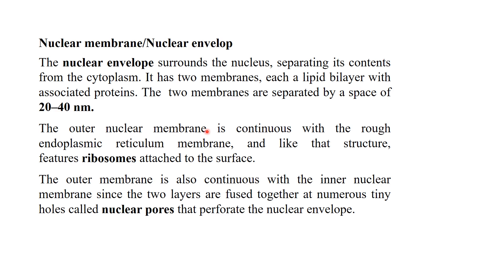The outer nuclear membrane is continuous with the rough endoplasmic reticulum and, like that structure, features ribosomes attached to its surface. The outer membrane is also continuous with the inner nuclear membrane, since the two layers are fused together at numerous tiny holes called the nuclear pores, which perforate the nuclear envelope.